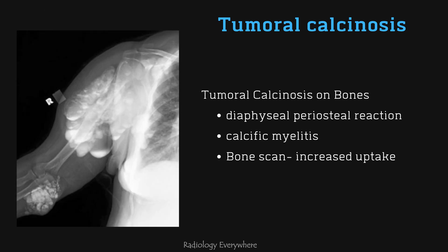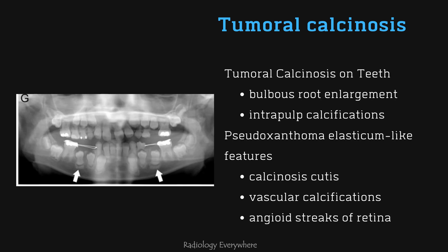When tumoral calcinosis affects bone, you can also see diaphyseal periosteal reactions — also called diaphysitis — and patchy areas of calcification in the medullary cavity, called calcific myelitis, with increased uptake on bone scintigraphy. When tumoral calcinosis affects teeth, there is bulbous root enlargement and pulp stones, also called intrapulp calcification.